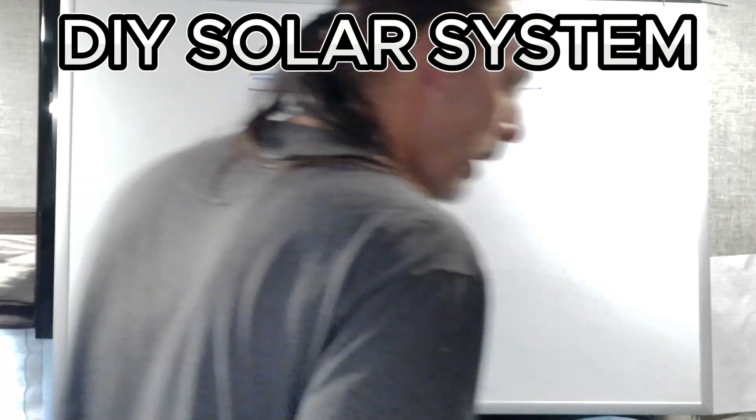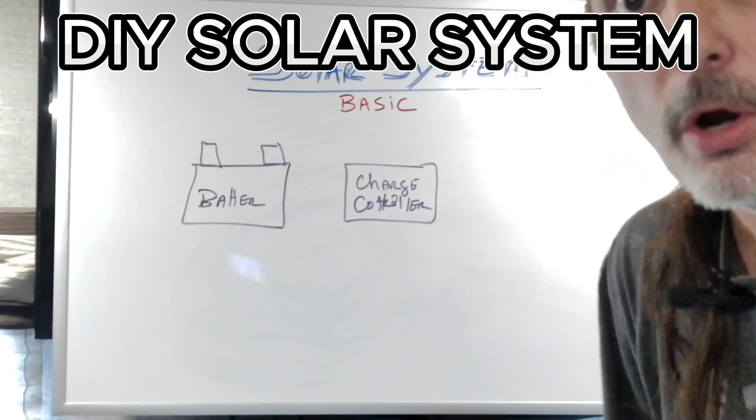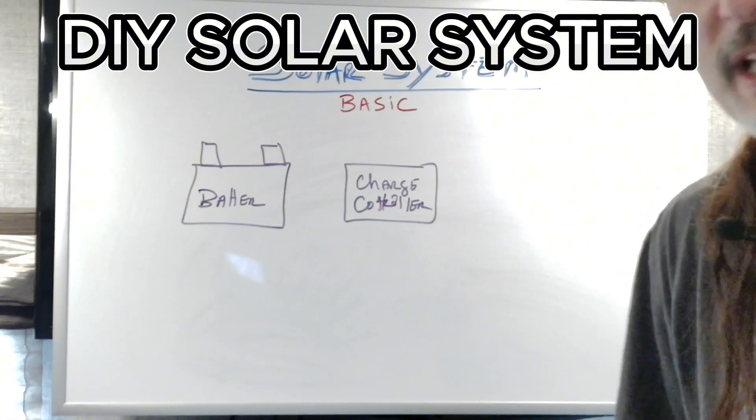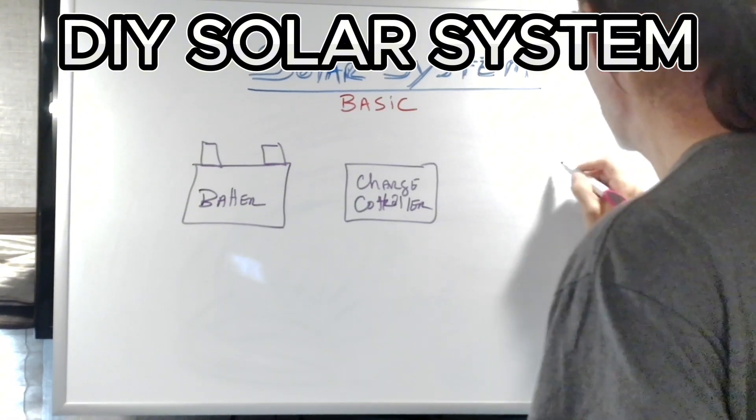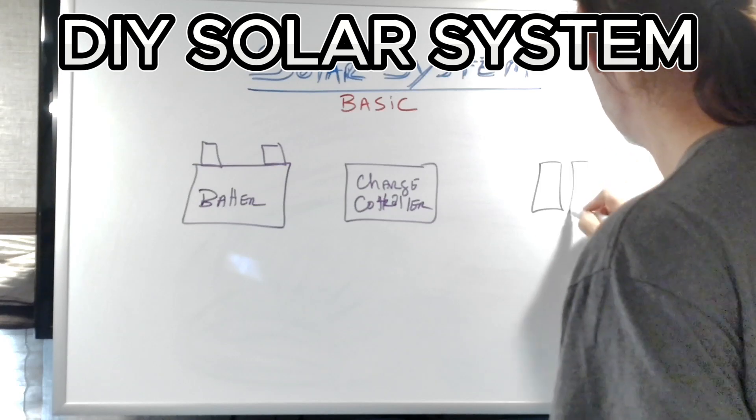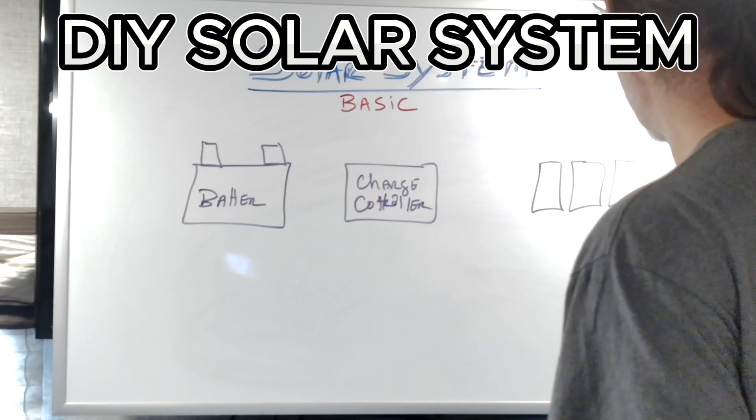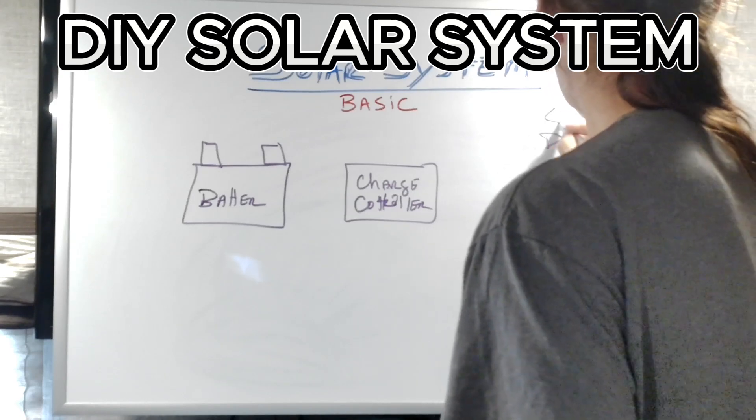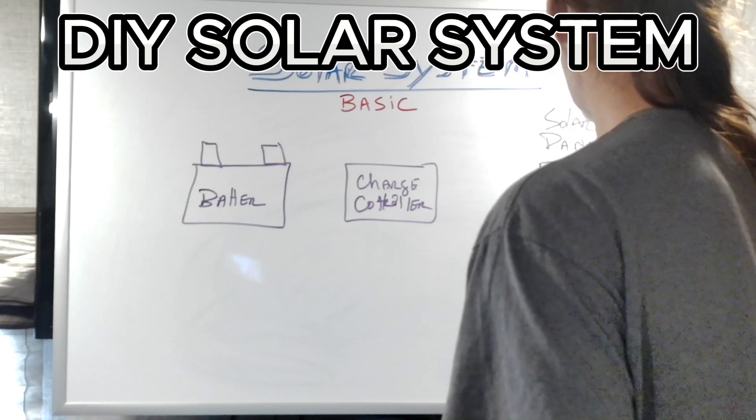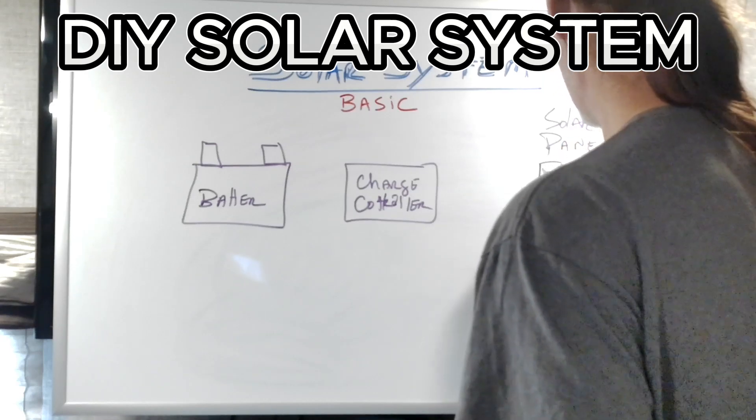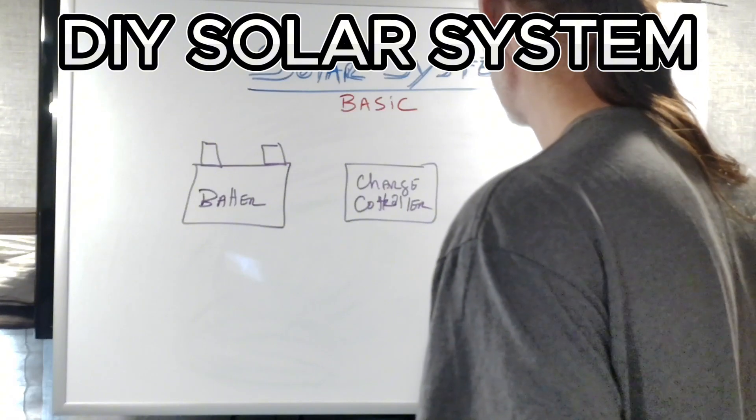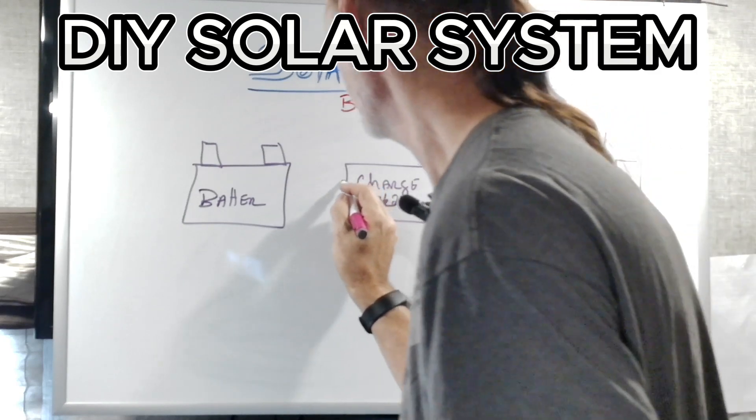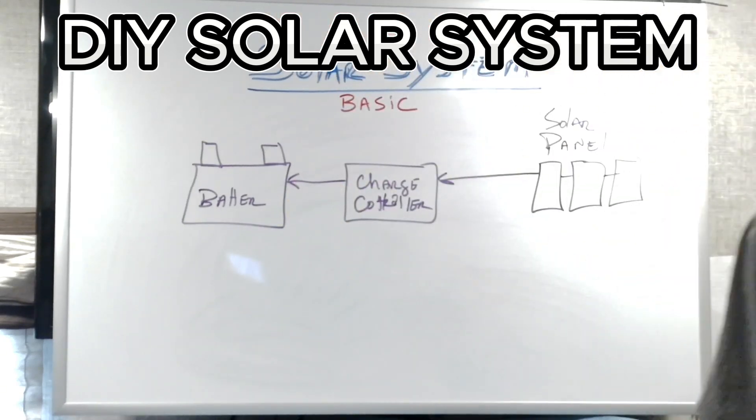A charge controller does nothing but take the power from your solar panels and put them into your battery safely. It takes the power from your solar panels, which we're going to list over here, which is the third item. So your solar panels, they connect to the charge controller, which in turn takes the power and sends it to the battery. It's as simple as that.